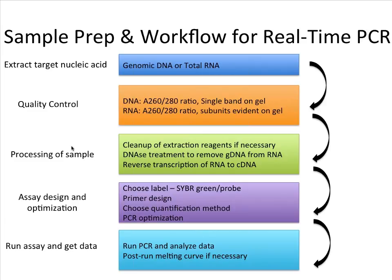You will need to choose the label — as we talked about earlier, will it be SYBR Green or will it be a probe. Design your primers, choose your quantification method, and optimize your PCR. I've simplified this but there are many steps involved here and some of them we will expand on in the coming slides.